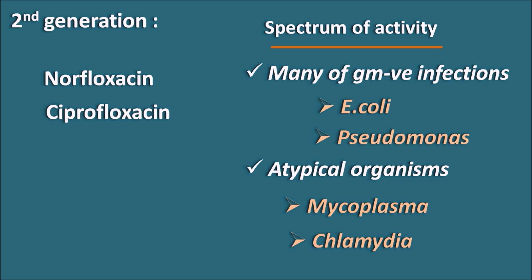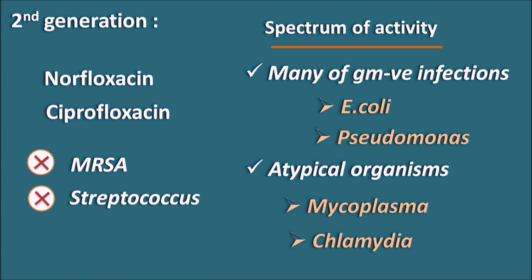However, norfloxacin and ciprofloxacin have limitations. These second generation drugs are not effective against MRSA (methicillin-resistant Staphylococcus aureus), a gram-positive infection that has developed resistance to methicillin. Similarly, these drugs are not effective against Streptococcus infections or Enterococcus infections. So second generation drugs are effective against gram-negative infections, but their activity against gram-positive infections is limited.